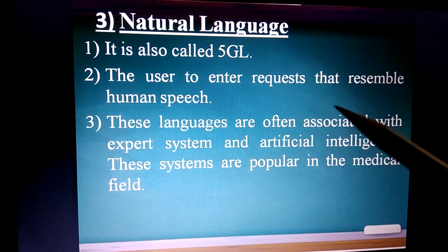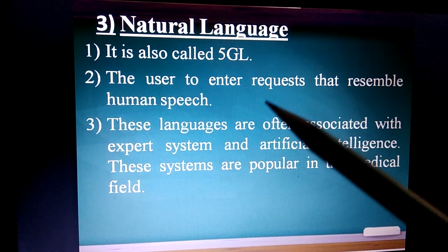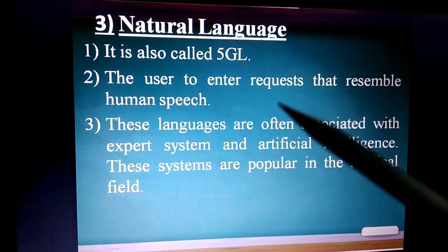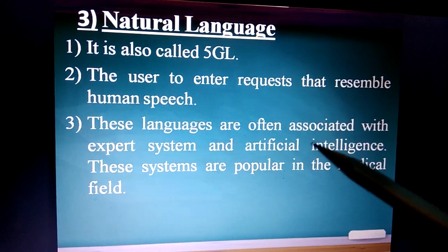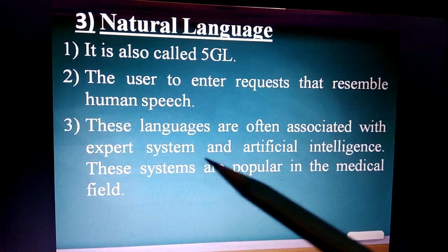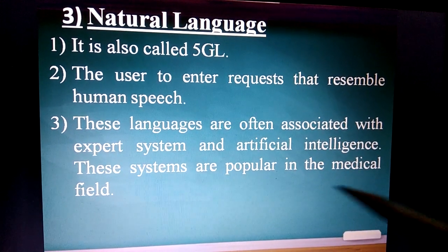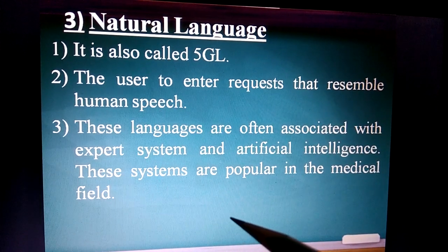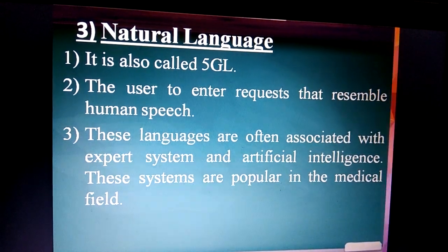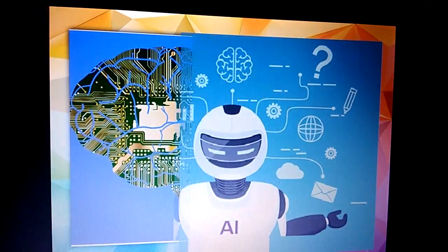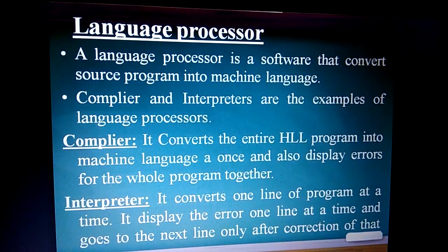Natural language is also called a fifth generation language. It allows the user to enter requests that resemble human speech — there is no need to type anything or use any other language, only human speech. These languages are often associated with expert systems and artificial intelligence, like robots, and are popular in the medical field.